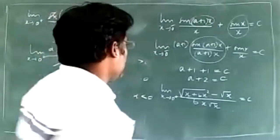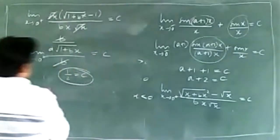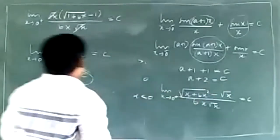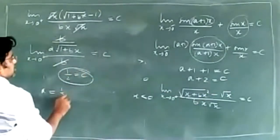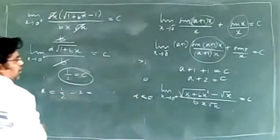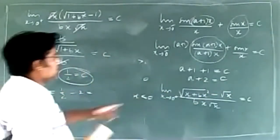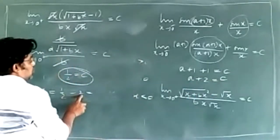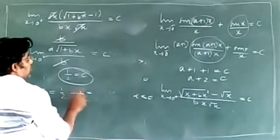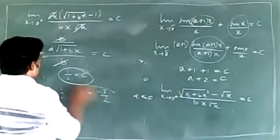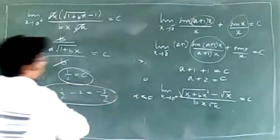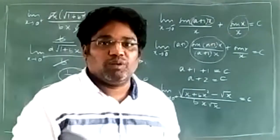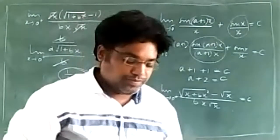C is equal to 1 by 2. A is equal to 1 by 2. So C is 1 by 2 minus 2, which gives 1 minus 2 equals minus 3 by 2. Therefore a value is minus 3 by 2, and c value is 1 by 2.